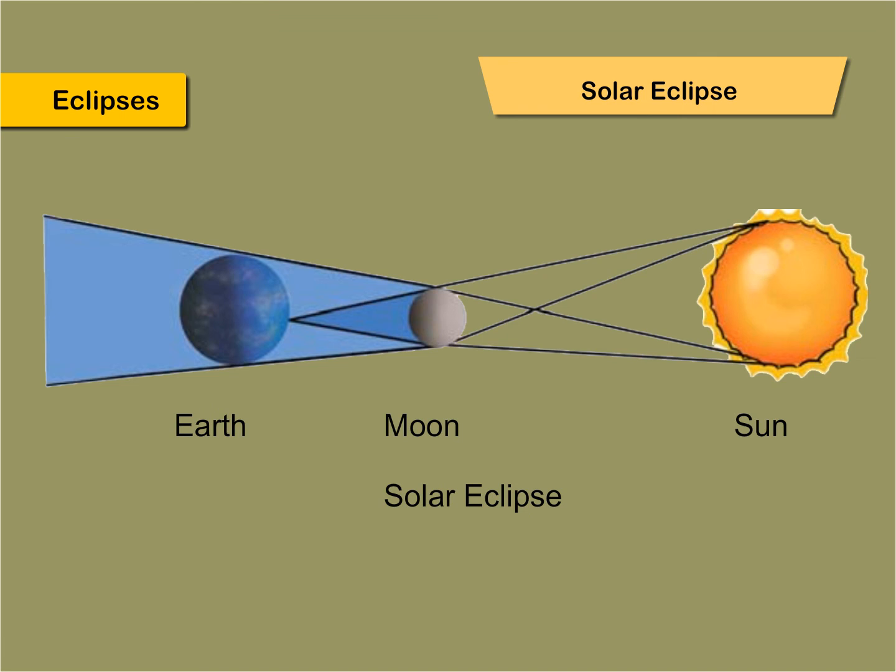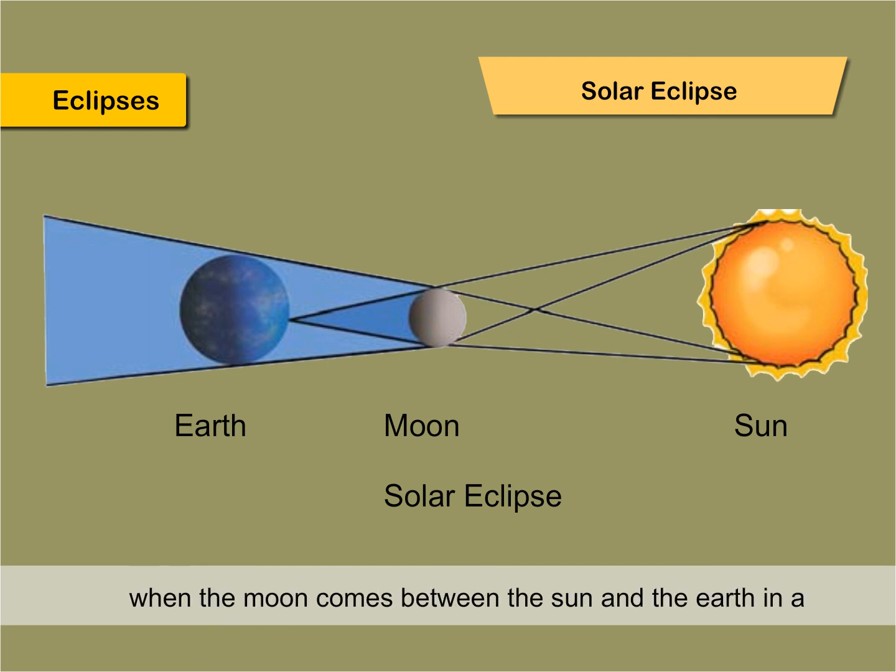Solar Eclipse: An eclipse of sun is called solar eclipse. Solar eclipse occurs when the moon comes between the sun and the earth in a straight line. The shadow of the moon falls on the earth. People living in this part of the earth cannot see the sun. A solar eclipse occurs during the daytime and on new moon day.